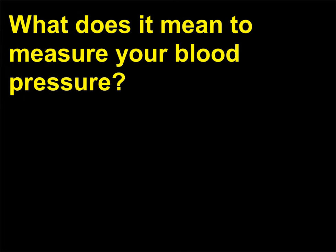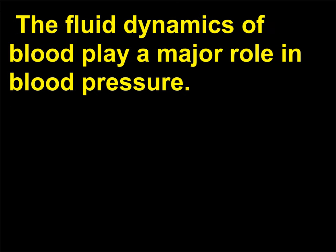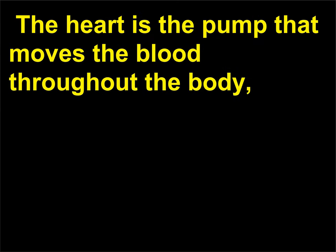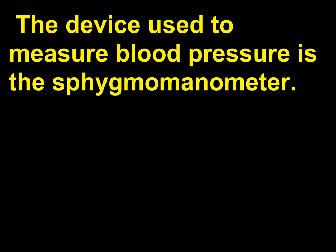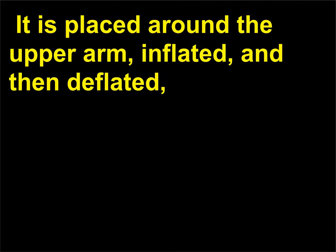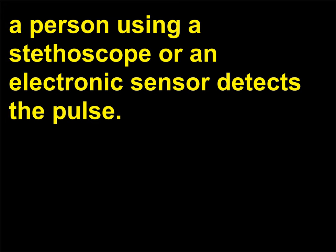What does it mean to measure your blood pressure? Blood pressure is the pressure your blood exerts on the walls of your arteries. The fluid dynamics of blood play a major role in blood pressure. The heart is the pump that moves the blood throughout the body, with vessels carrying the blood to different sections of the body. The device used to measure blood pressure is the sphygmomanometer. It is placed around the upper arm, inflated, and then deflated, while a meter measures the pressure passing through that section of the arm and either a person using a stethoscope or an electronic sensor detects the pulse.